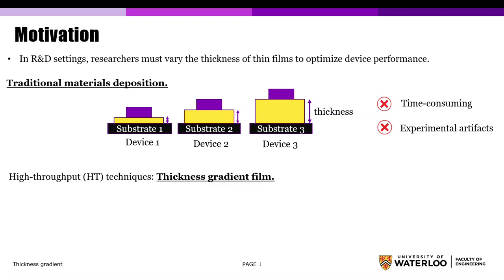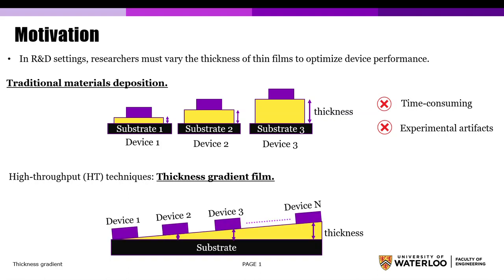High-throughput techniques such as thickness gradient film can solve this issue. In this approach, deposited thin film can vary across the substrate.